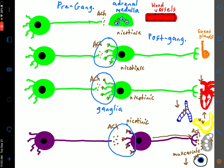Let's go through the sympathetic pathways. The sweat glands are the one exception: when acetylcholine binds to nicotinic receptors on post-ganglionic neurons leading to sweat glands, it triggers an action potential, and the post-ganglionic neuron releases acetylcholine, which then binds to muscarinic receptors on the sweat glands, causing sweating. This is the one outlier of the sympathetic division where the post-ganglionic neuron releases acetylcholine to bind to muscarinic receptors.